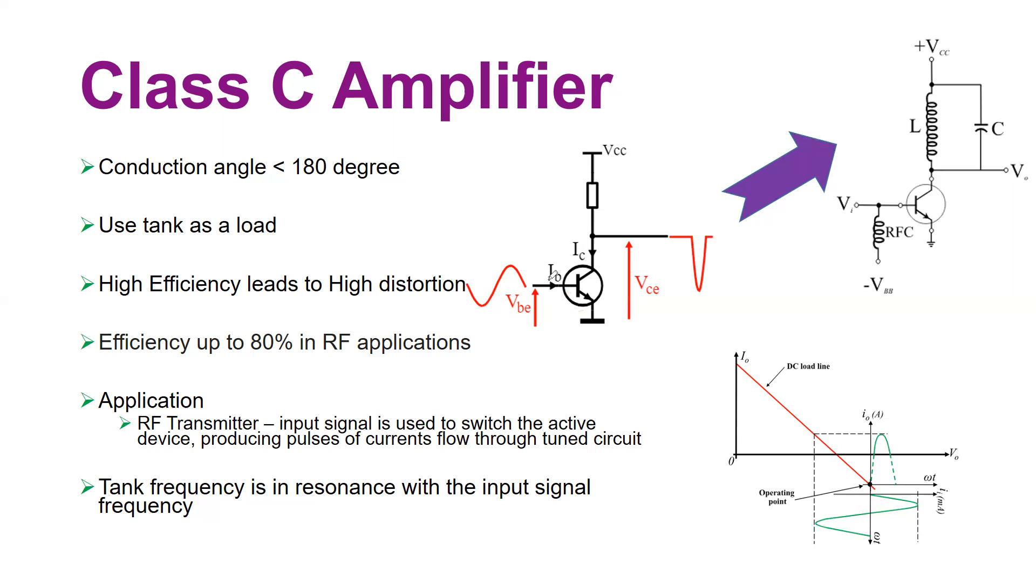Therefore you have a base current flow into the base pin of the transistor. Once you put the transistor into conduction, there is a DC gain of the transistor beta. Beta multiplied by IB gives you IC that flows through the load RL, which is connected between the DC power supply and the collector pin of the transistor.